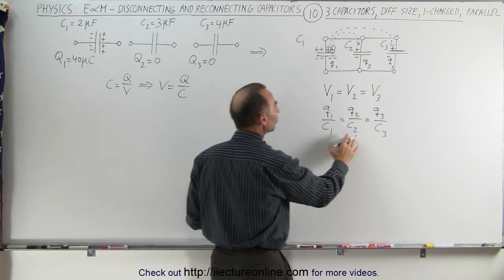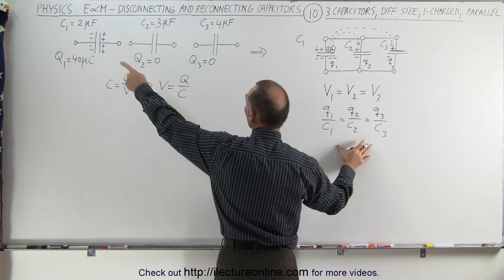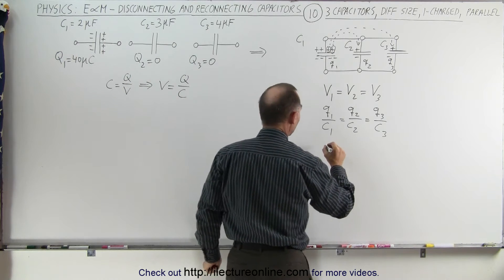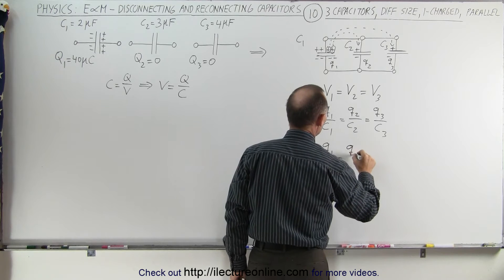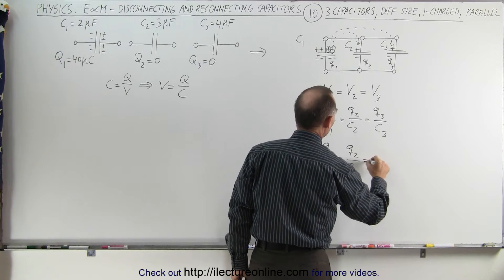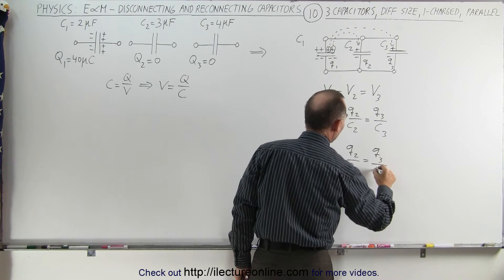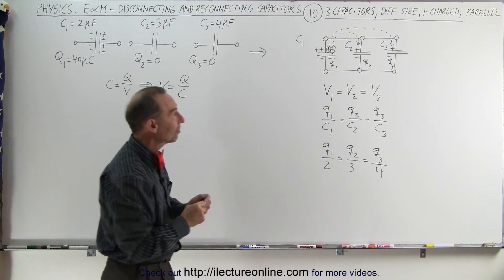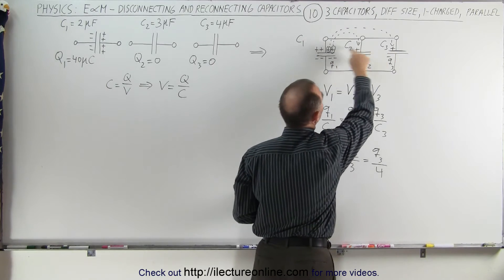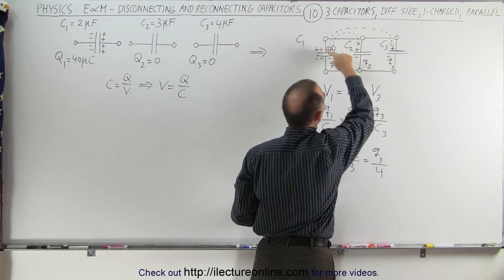Since c1, c2, and c3 are not equal to each other we now must put those values in. So we get q1 divided by 2 must equal q2 divided by 3 must equal q3 divided by 4. And we know that since we have all the positive ends connected to one another that the total charge on the three capacitors must equal the original charge that we started with.